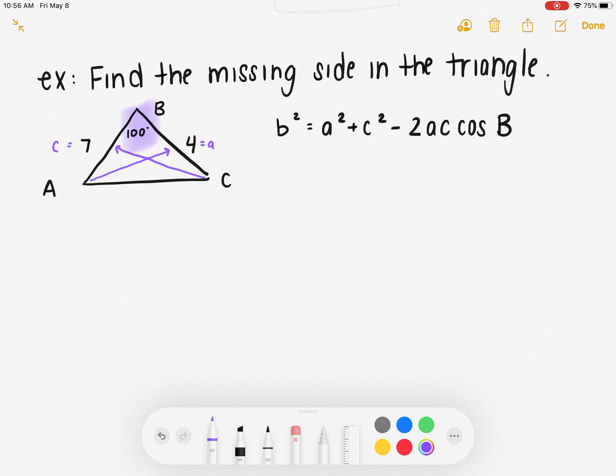I'm just going to fill in what I know. I'm looking for side B because I don't have that. But I do know A is 4, I know C is 7, minus 2, A is 4, C is 7, cosine of angle B is 100 degrees.